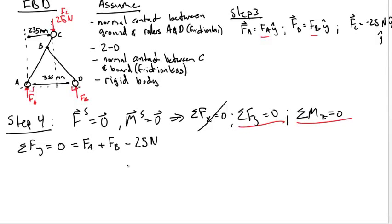We must choose one more equation to solve this problem. To sum the moments in Z we must choose a moment center. There are infinite points we could choose, but three points we have easy geometry for are A, C, and D. When taking a moment about a point, it is convenient to eliminate an unknown. If we use A as our moment center, the force at A contributes no moment about A because the radius is zero. Similarly, if we take the moment about D, the force at D contributes no moment because the lever arm is zero. If we take the moment about C, both force A and force D contribute, while the known 25 N force contributes no moment. Therefore the most useful points are A or D. We'll take moments about A.